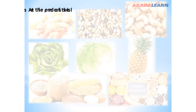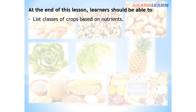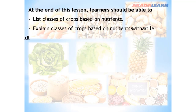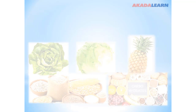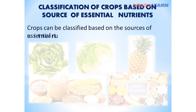At the end of this lesson, learners should be able to list classes of crops based on nutrients and explain classes of crops based on nutrients with at least three examples for each. Crops can be classified based on the sources of essential nutrients.